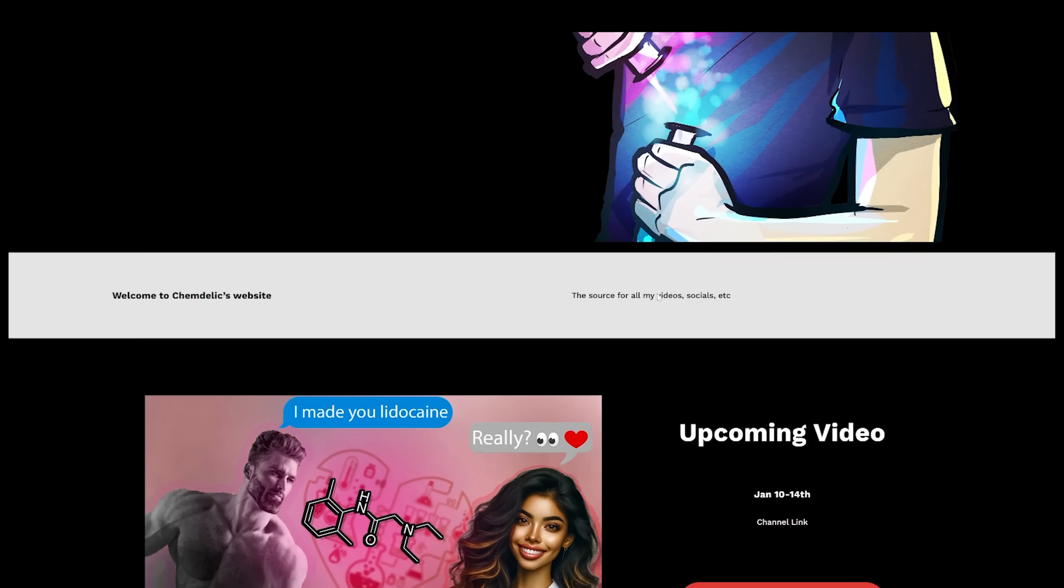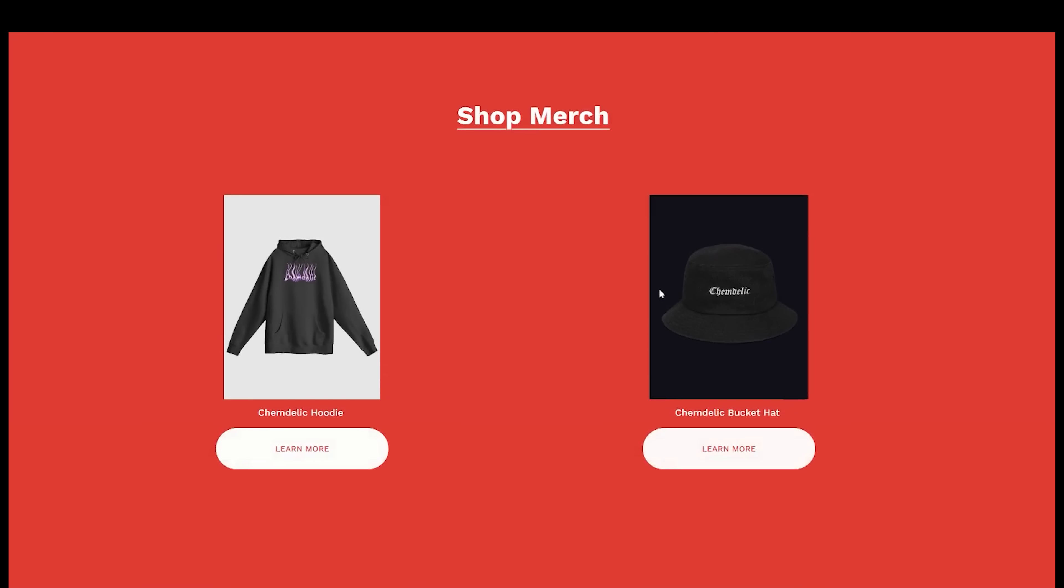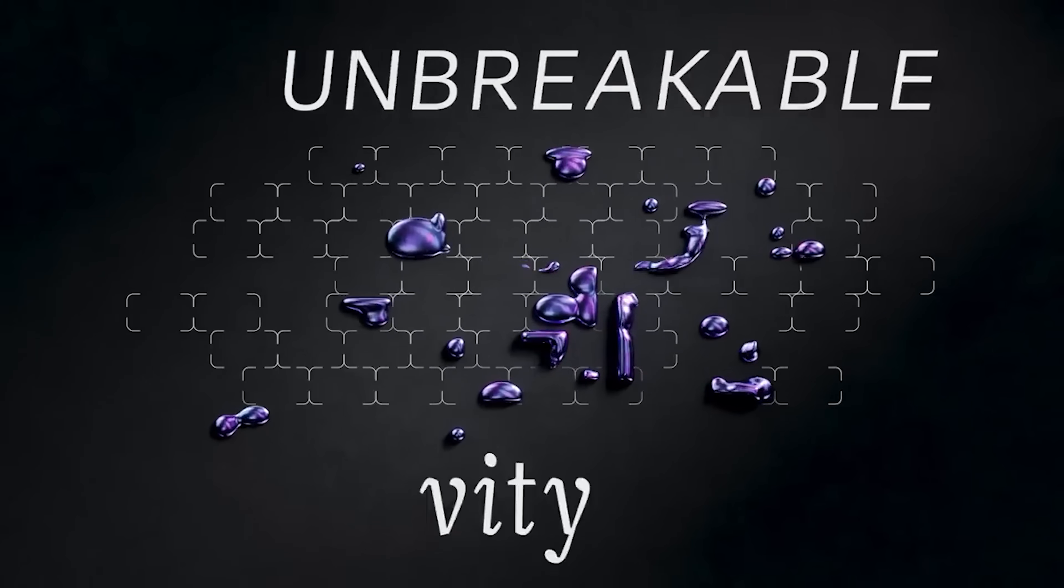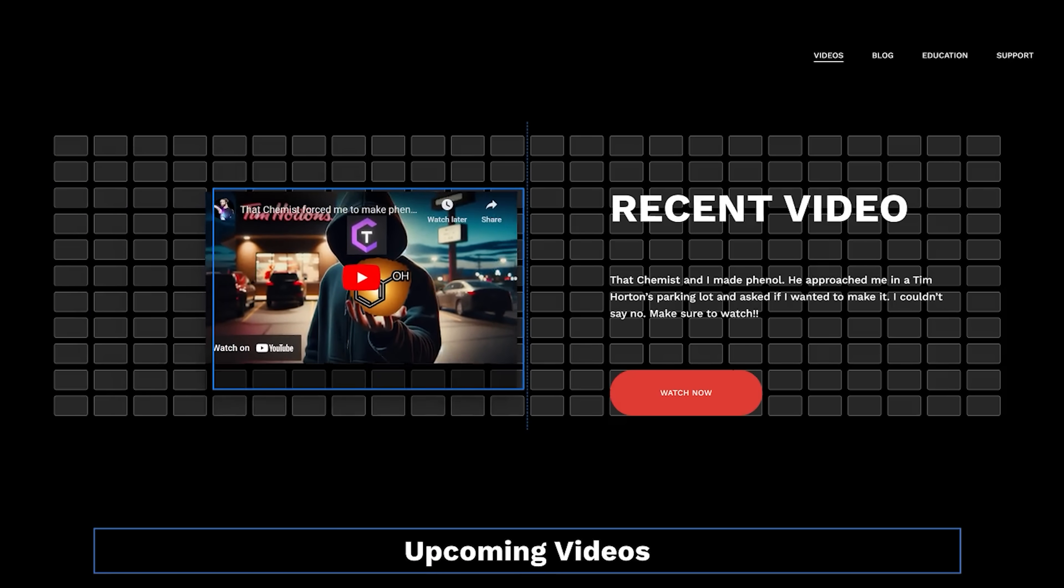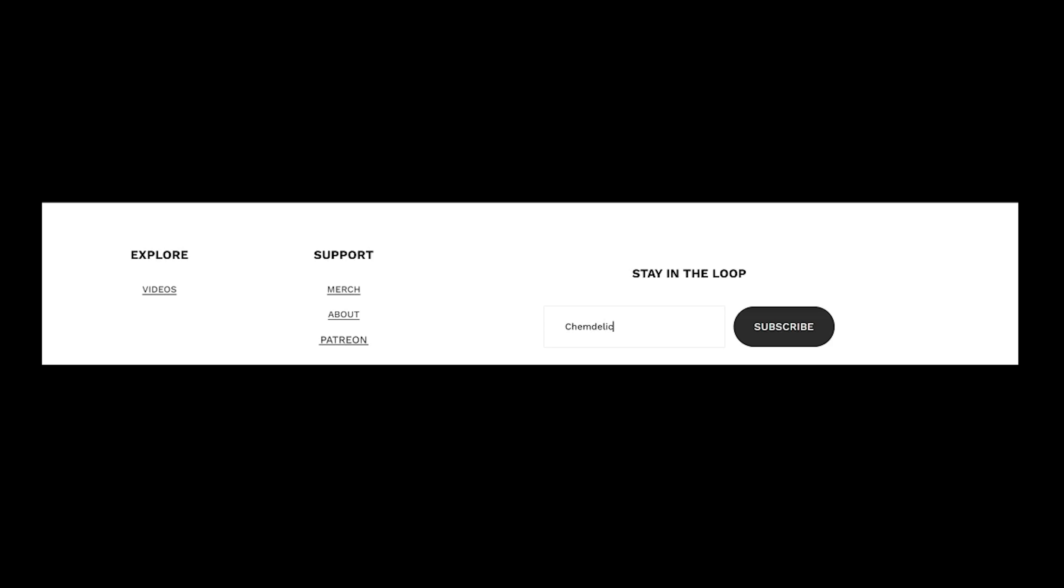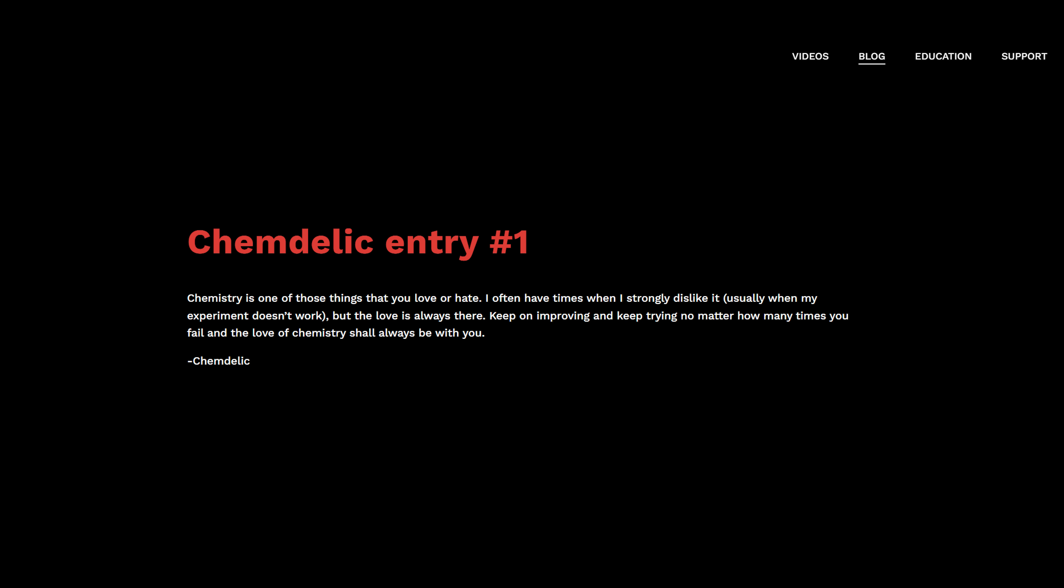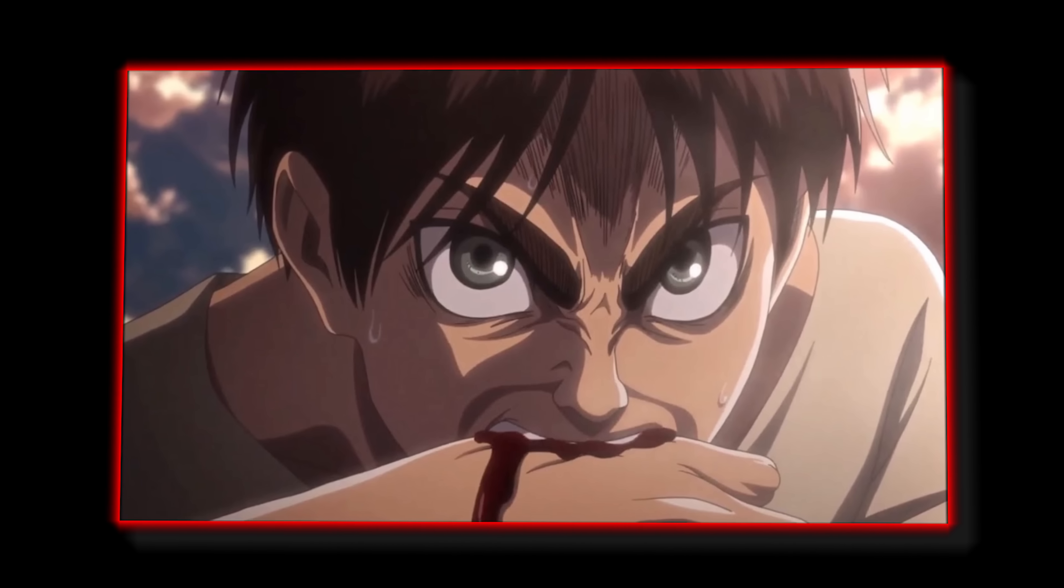Squarespace is an all-in-one website platform for entrepreneurs looking to stand out and succeed online. Whether you're just starting out or managing a growing brand, Squarespace makes it easy to create a beautiful website, engage with your audience, and sell anything from products to content. Squarespace has Fluid Engine, a next-gen design system that makes building your website super easy with drag and drop functionality. It also has email campaigns and blogging tools. To try everything Squarespace has to offer, go to squarespace.com/kimdelic to save 10% off your first purchase using code kimdelic. Alright, let's get back to it.